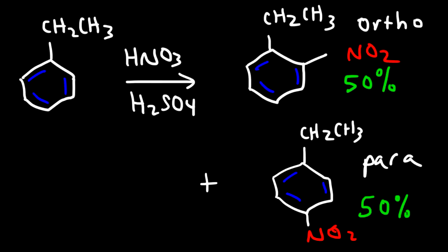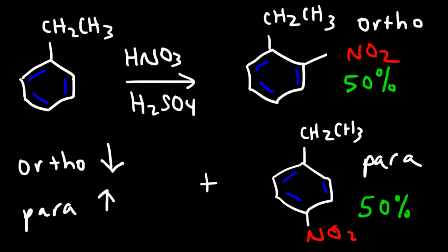Notice what happened when we replaced the methyl group with an ethyl group. By replacing the methyl group with a bulkier, more sterically hindered group, the ortho product yield went down and the para product yield went up. Keep that in mind: if you use a very bulky substituent, the para product will be favored, but if you use a substituent that is not bulky like the methyl group, you'll get a good yield for the ortho product as well.